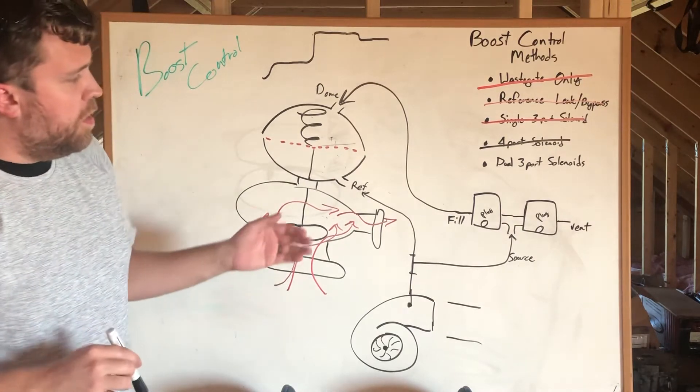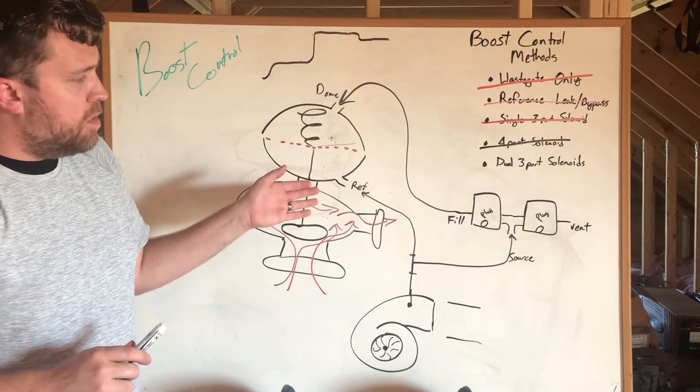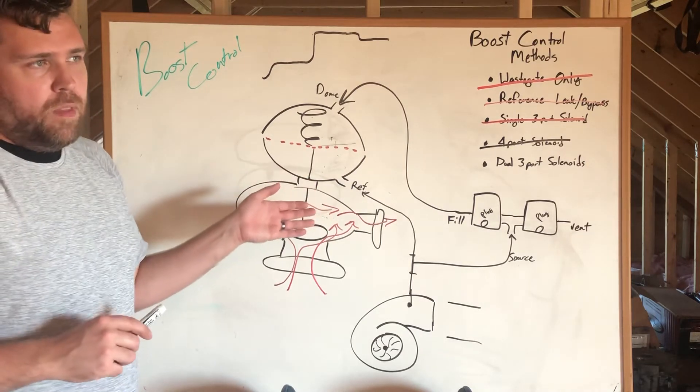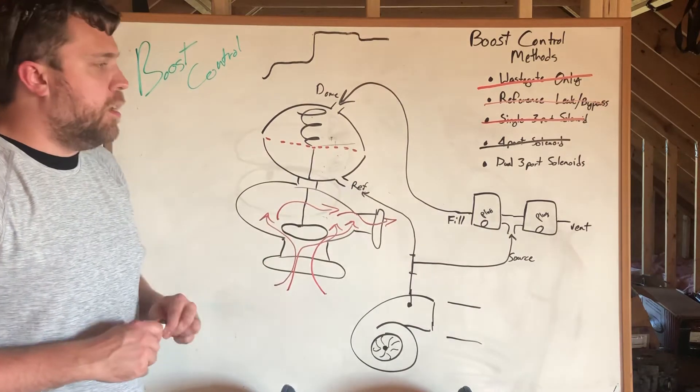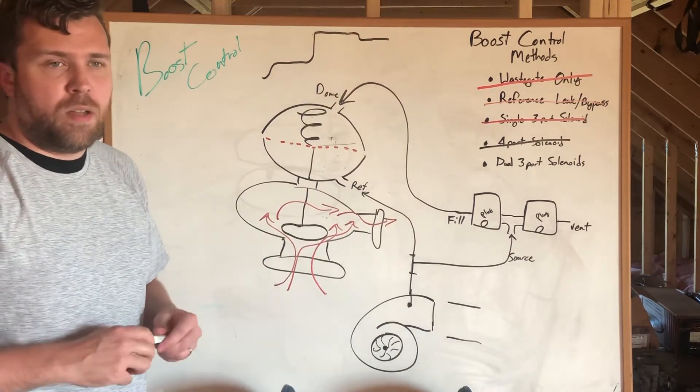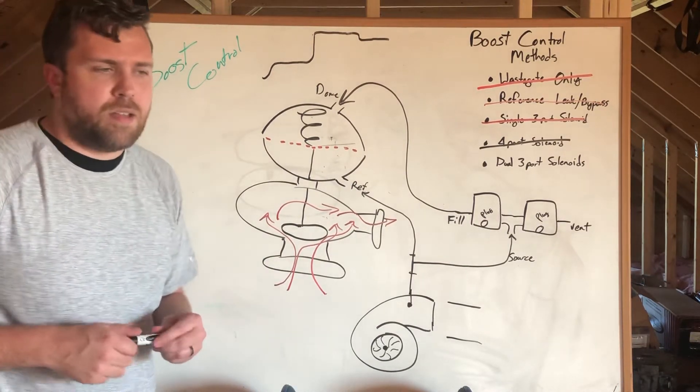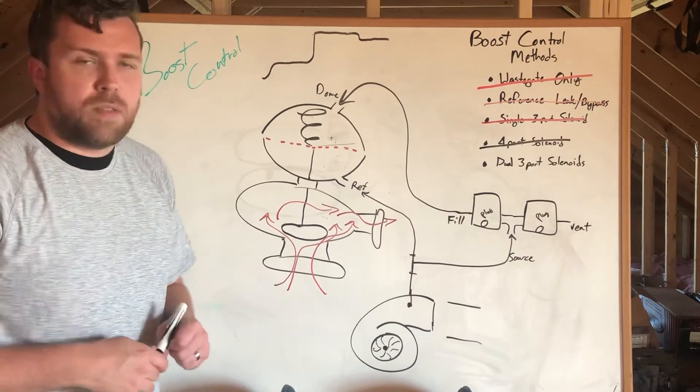So this setup is pretty easy to plumb. A little more cost because you got to buy a second solenoid. Probably the biggest downside to it if you have a Terminator X style setup is gonna be losing that second output.